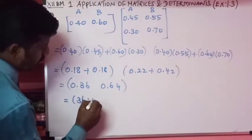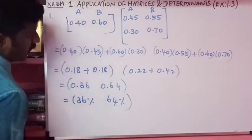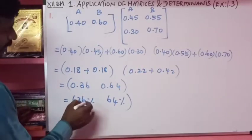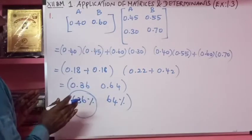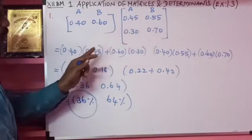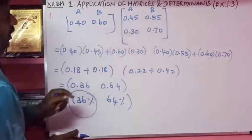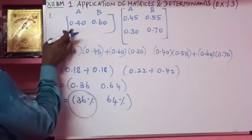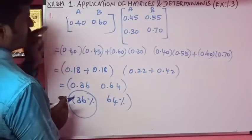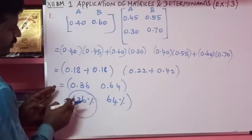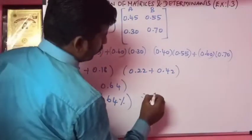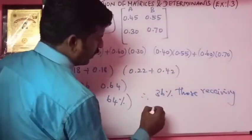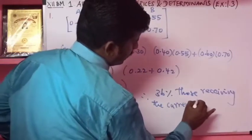The result is 0.36 and 0.64, which means 36 percent and 64 percent. Therefore, 36 percent of those receiving the current letter can be expected to order a subscription.